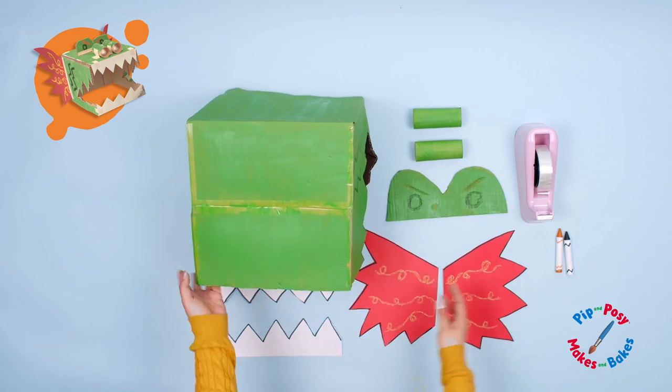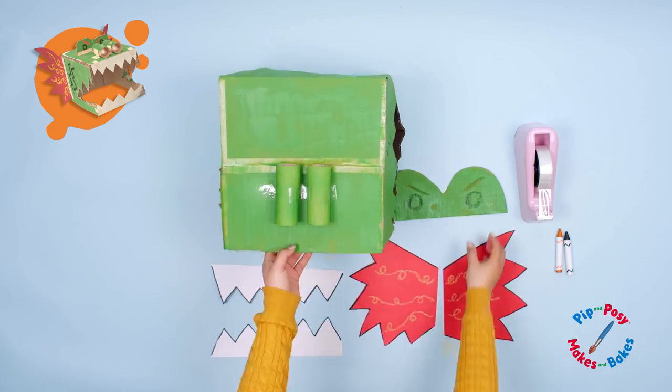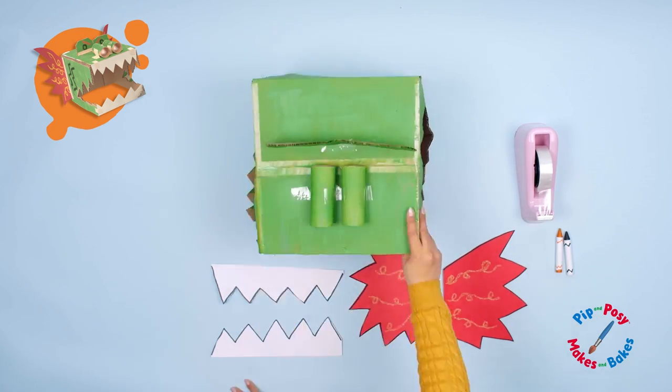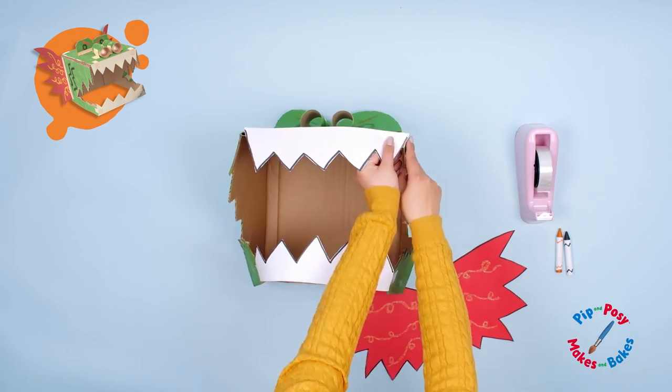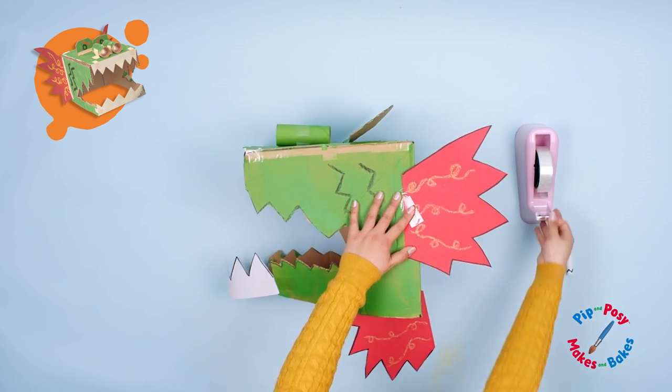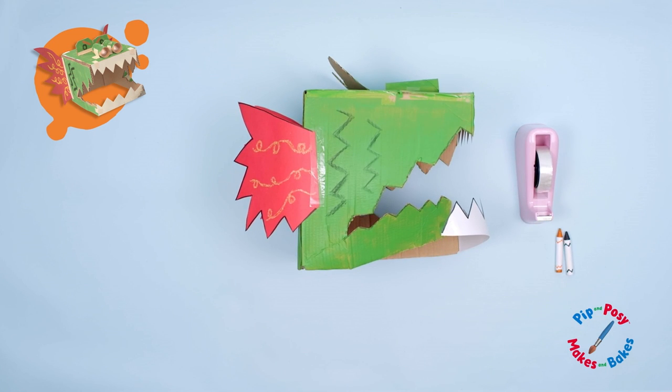Use your sticky tape to stick on the dragon's eyes and nose on the top of the box, teeth at the front of the box, and the red spiky sides on its head. Well done! You did it!